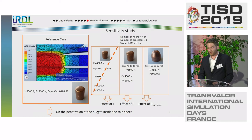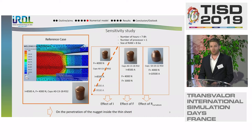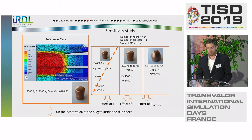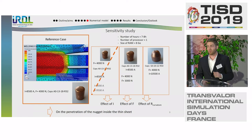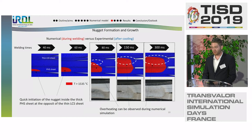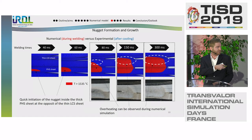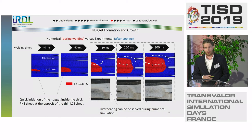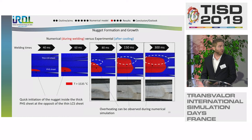First, I'm going to compare the numerical results with the experimental results. Then I will present the results of the parametric study in order to observe the influence of the different parameters on the development of the nugget and its penetration inside the thin sheet. I won't take time to show the effect of the current because it's well known that with a higher current we have a bigger nugget, so we'll only focus on the load and the curvature of the electrode. Due mainly to the strong disymmetry between the contact resistances, the model shows that the melted pool appears quickly inside the 22MnB5 (the PHS sheet), then grows in the assembly towards the thin sheet. By comparison with the micrography, we can observe that the molten pool is too big and overheated. The main reason may be that we don't take into account the convective phenomena in the molten pool.